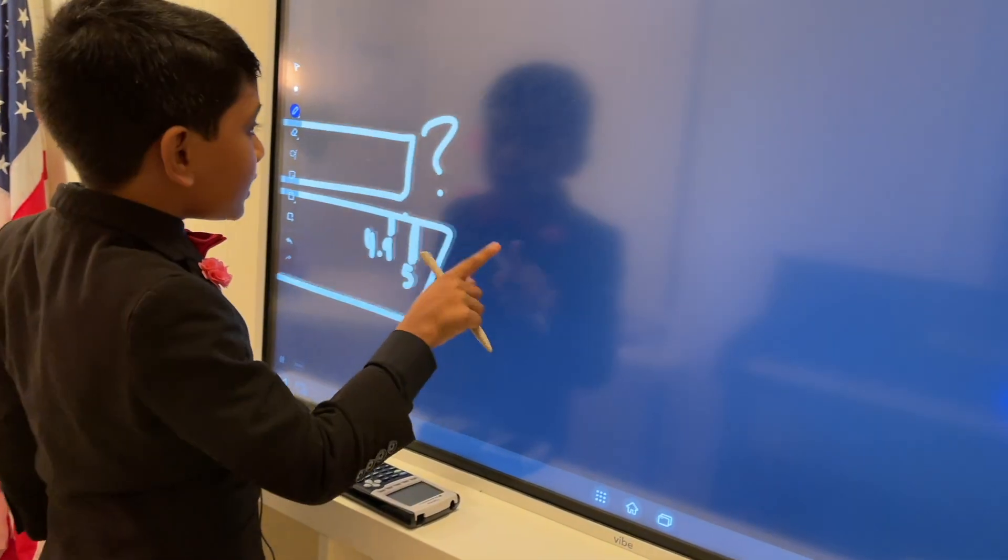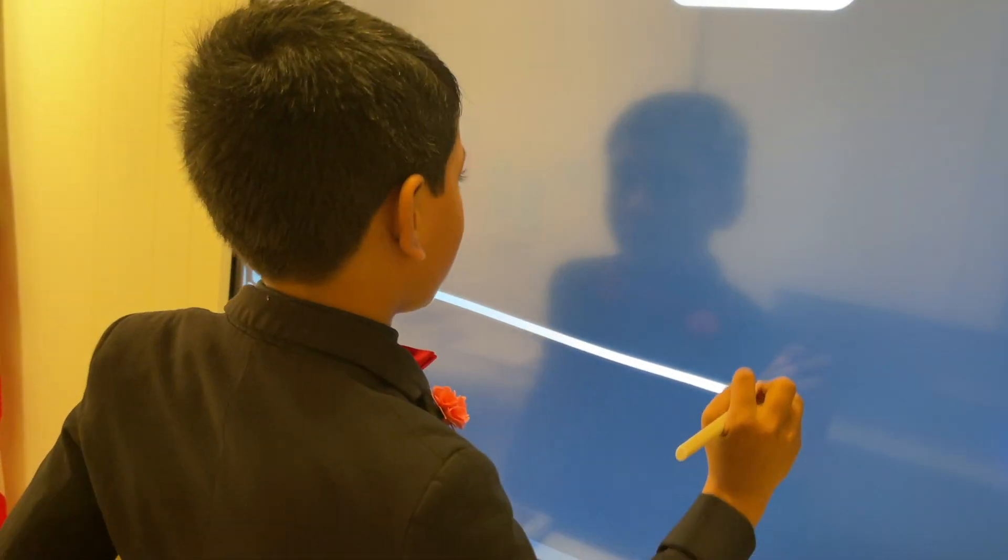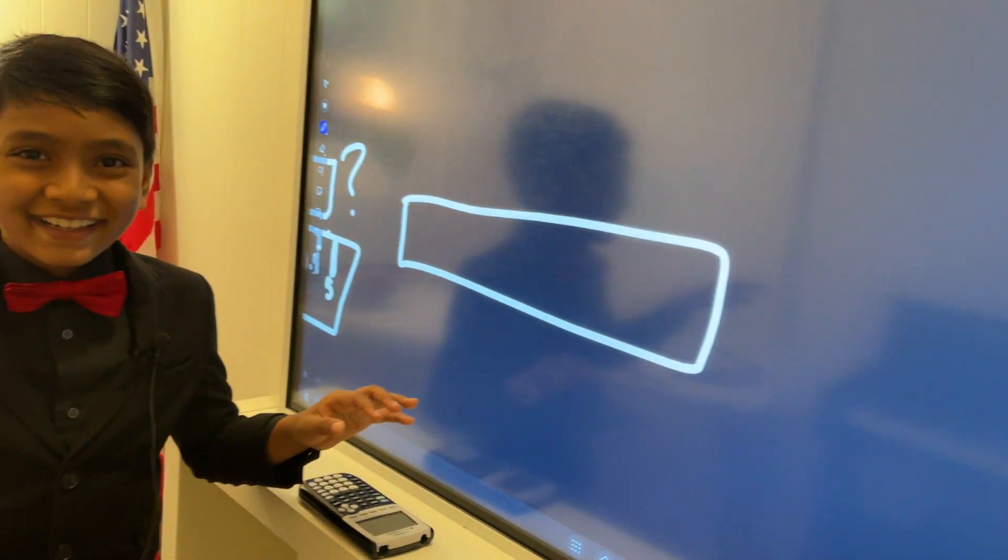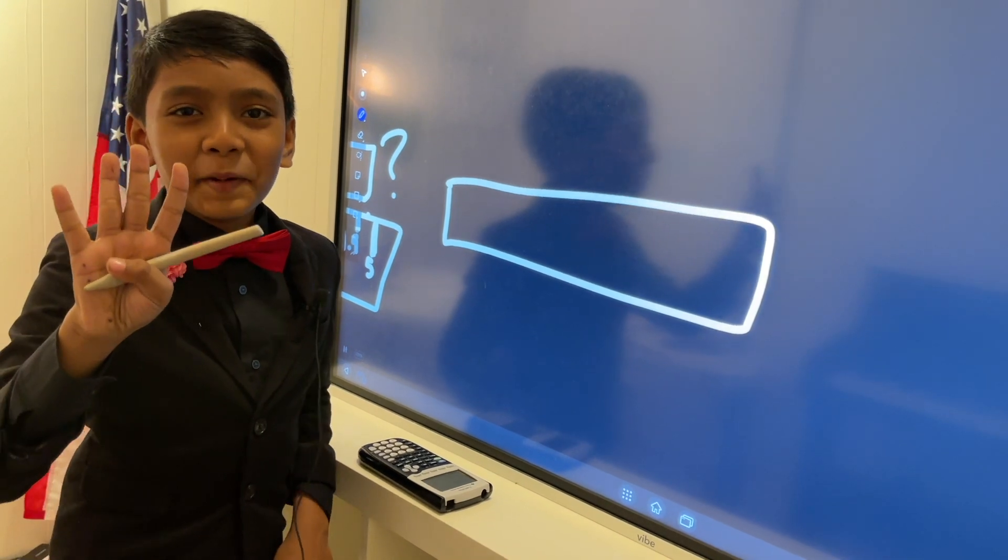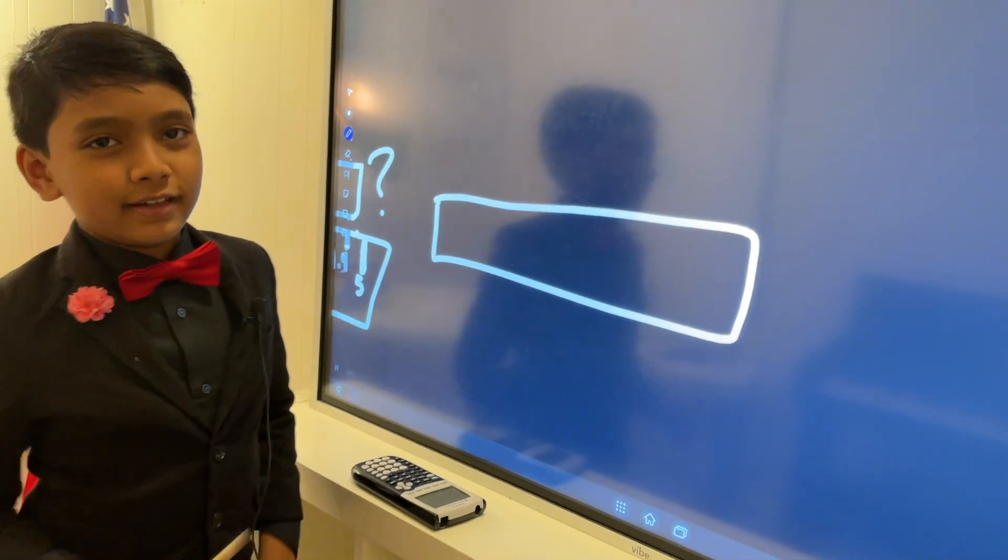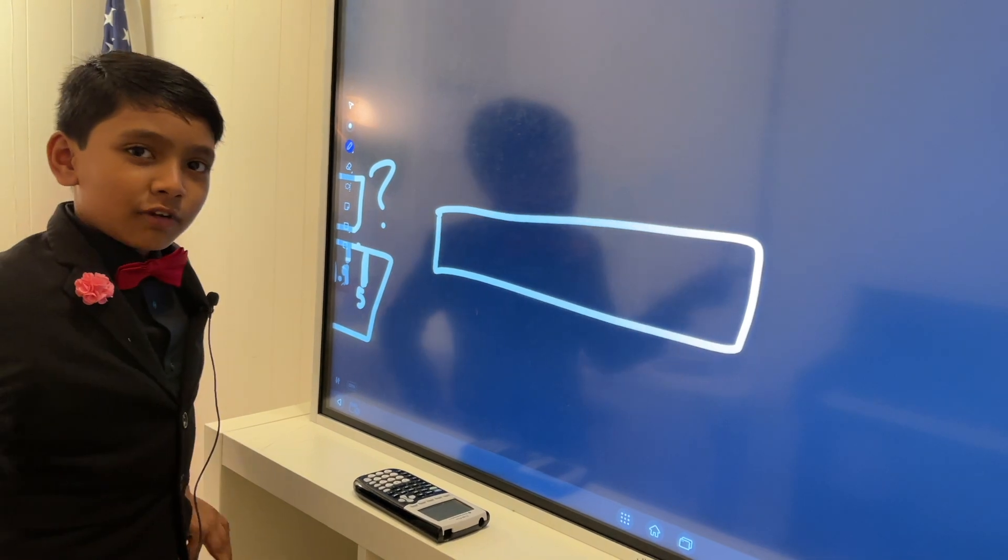So, first of all, what is the precision of a regular centimeter ruler? Quiz. 5, 4, 3, 2, 1. Pause. All right. If you've continued, then you should have got the answer.